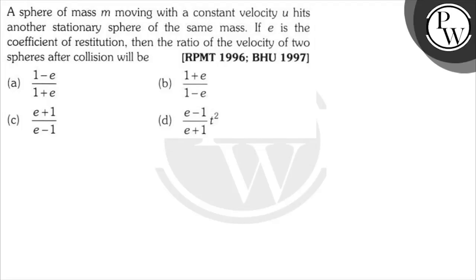A sphere of mass m moving with a constant velocity u hits another stationary sphere of the same mass. If e is the coefficient of restitution, then the ratio of the velocity of the two spheres after collision will be.